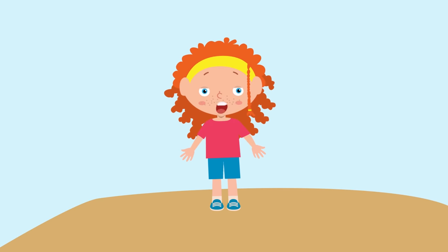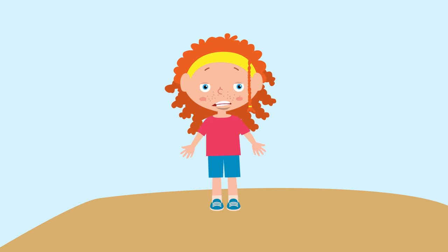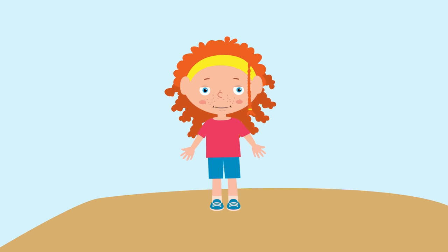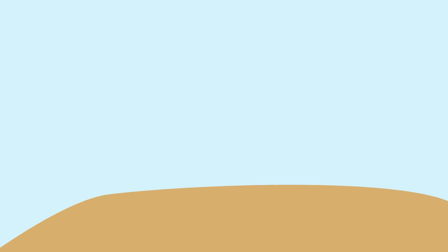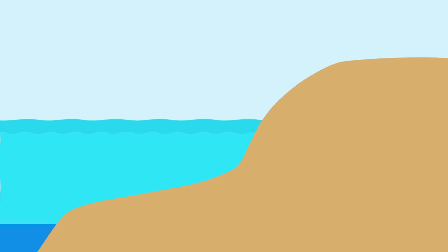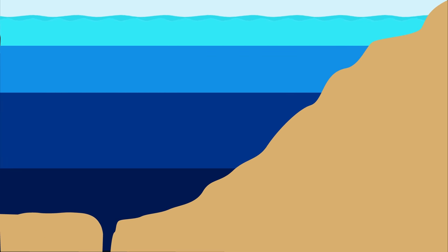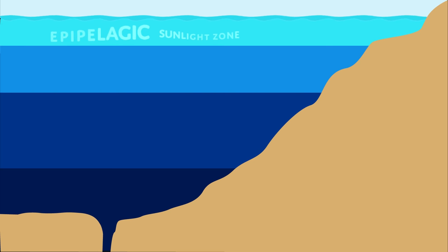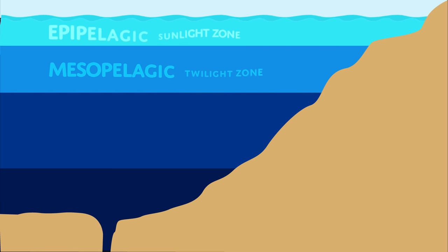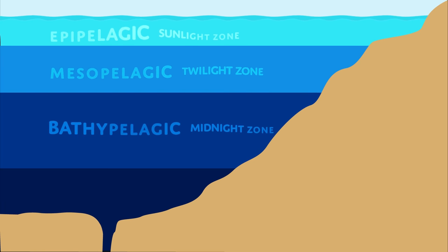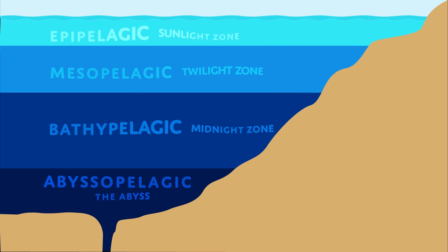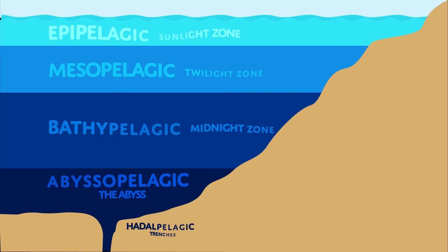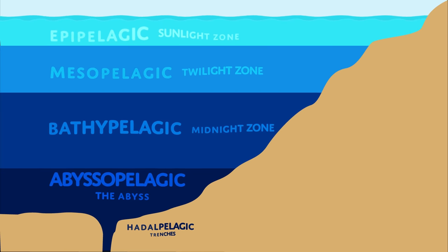Let's learn about the layers of the ocean. The ocean is very deep and is divided into layers: epipologic, mesopologic, bathypologic, abyssopologic, and hadopologic.